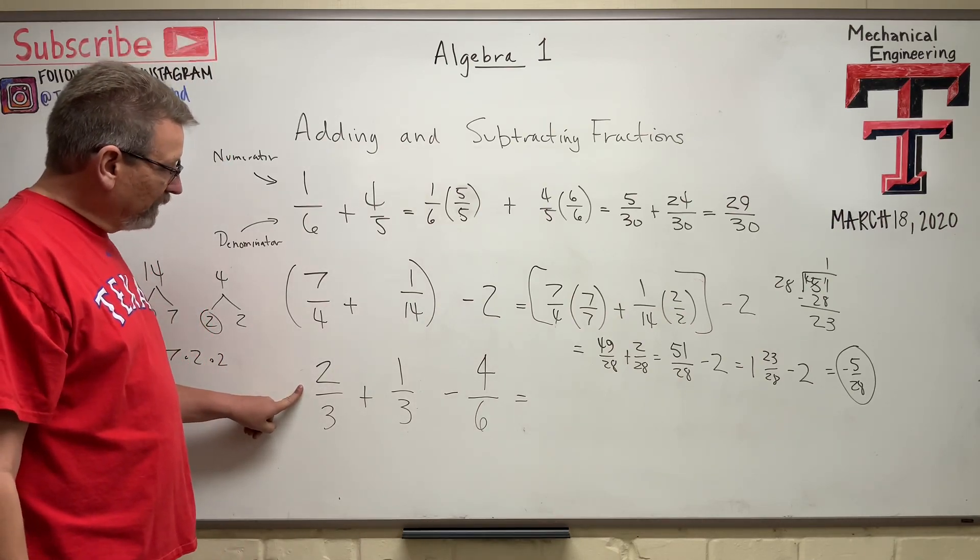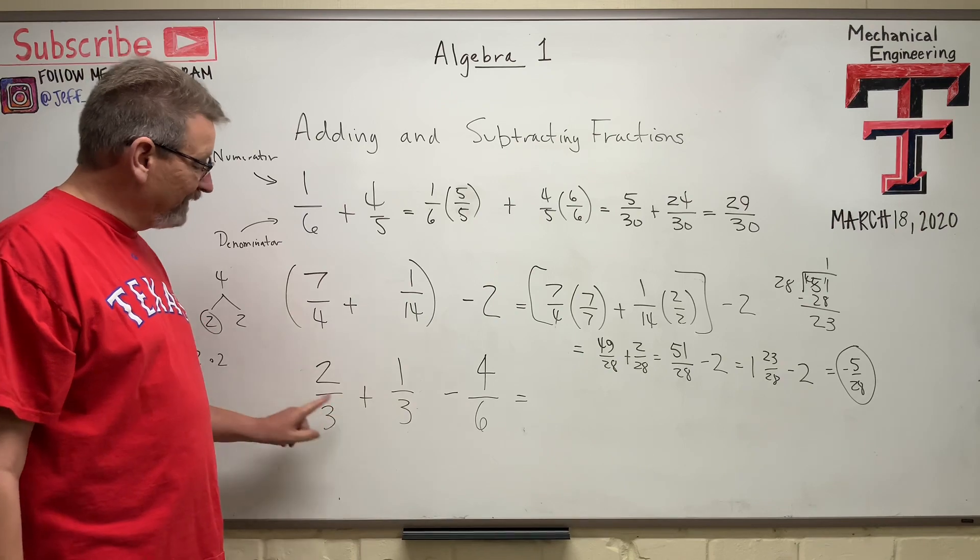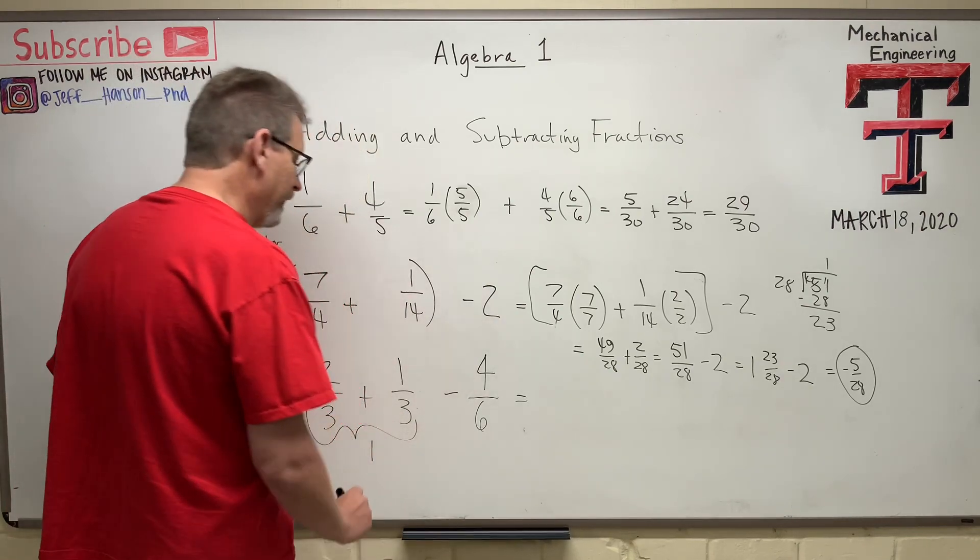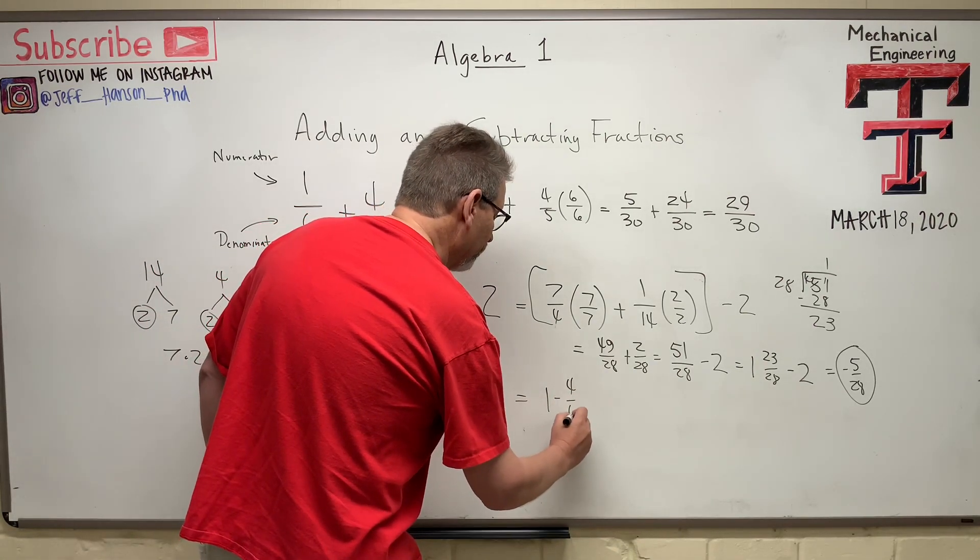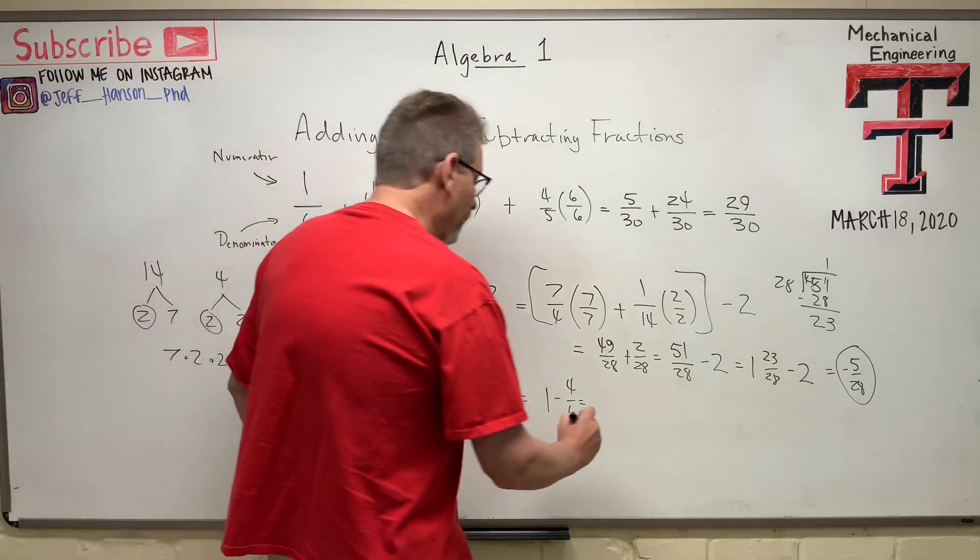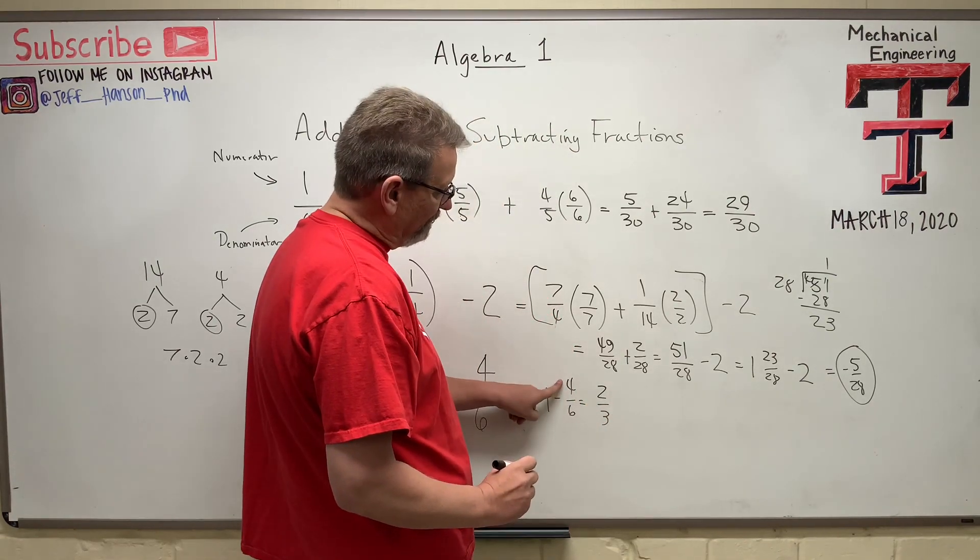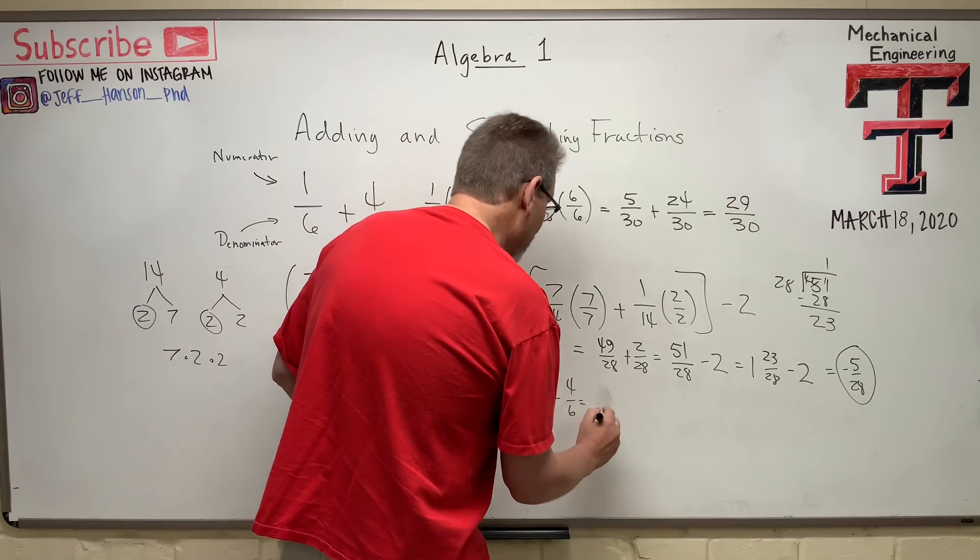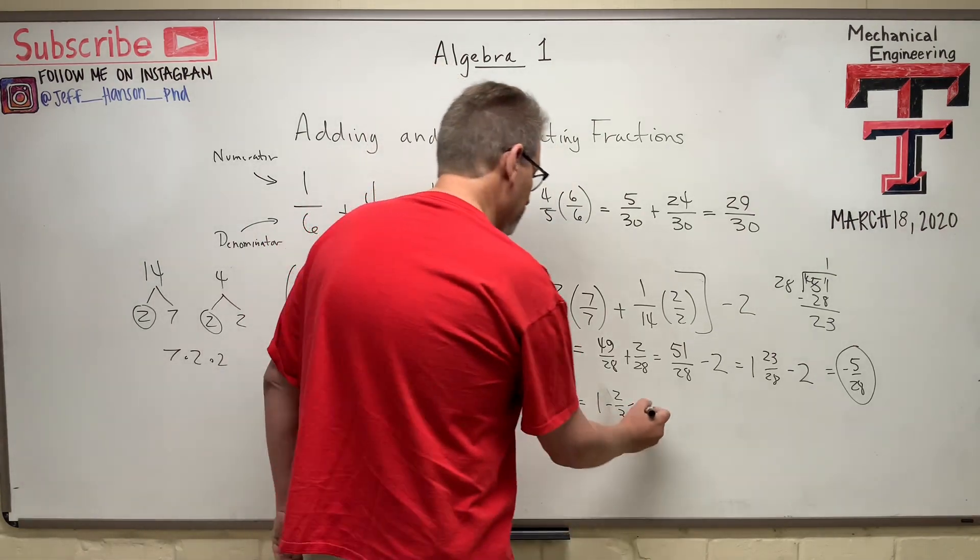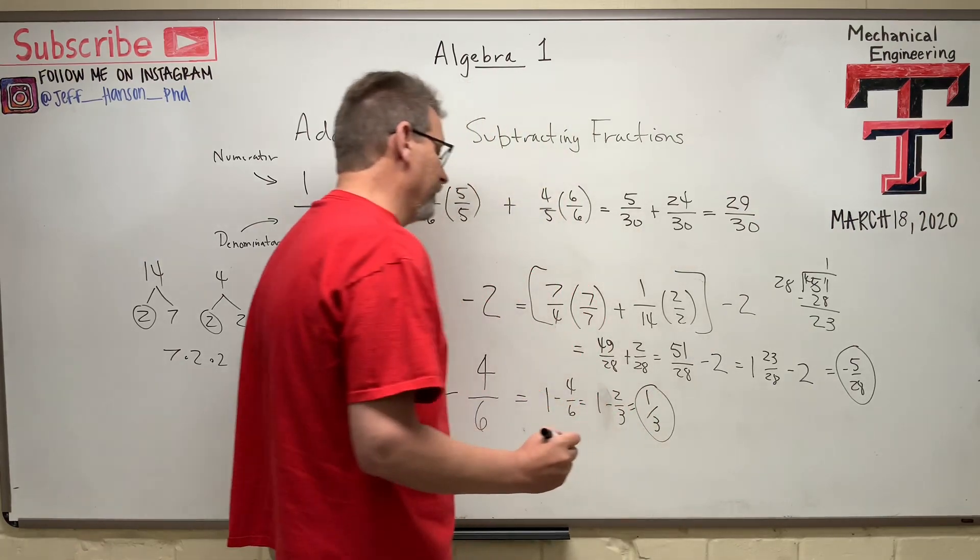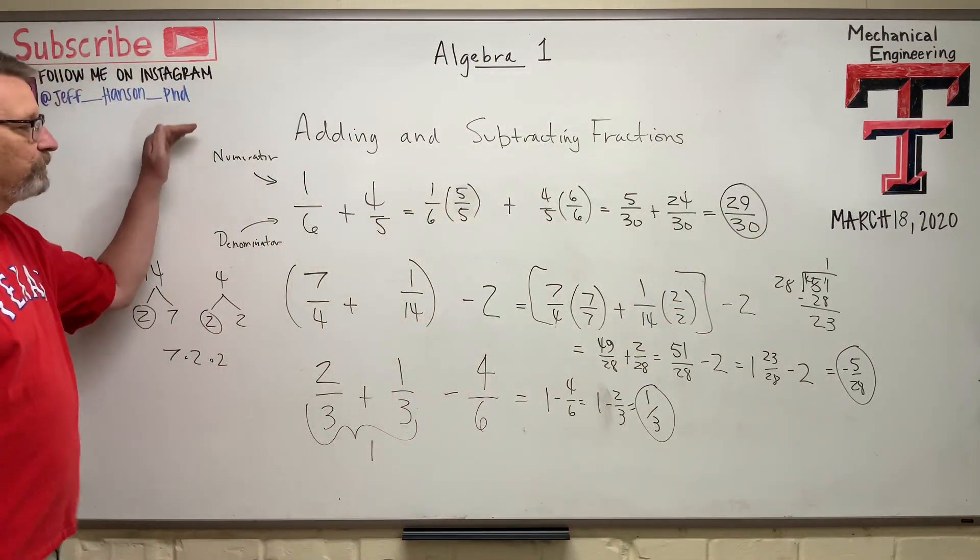Let's do this last one down here. 2 thirds plus 1 third, do we have to do anything to that? No, we just add those again. That's easy. 2 thirds plus 1 third is just 1 minus 4 over 6. So 1 minus 4 over 6. Now 4 over 6 will reduce. That'll reduce to 2 over 3, if I divide that by 2 and that by 2. So now I get 1 minus 2 over 3, and 1 whole minus 2 thirds leaves a third remaining. And there's the answer. So there's our three fraction problems worked out, adding and subtracting fractions.